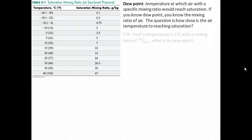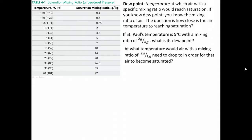Let's look at an example. If St. Paul, Minnesota's temperature is 5 degrees Celsius with a mixing ratio of 2 grams of water per kilogram of air, what is its dew point? Or in other words, at what temperature would air with a mixing ratio of 2 grams of water per kilogram of air need to drop in order for that air to become saturated?